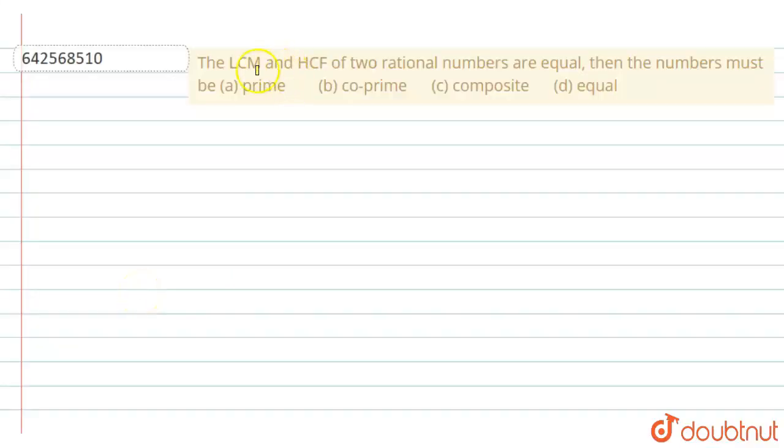The question says that the LCM and HCF of two rational numbers are equal. Then the numbers must be option (a) prime, (b) co-prime, (c) composite, or (d) equal. We have to find out.